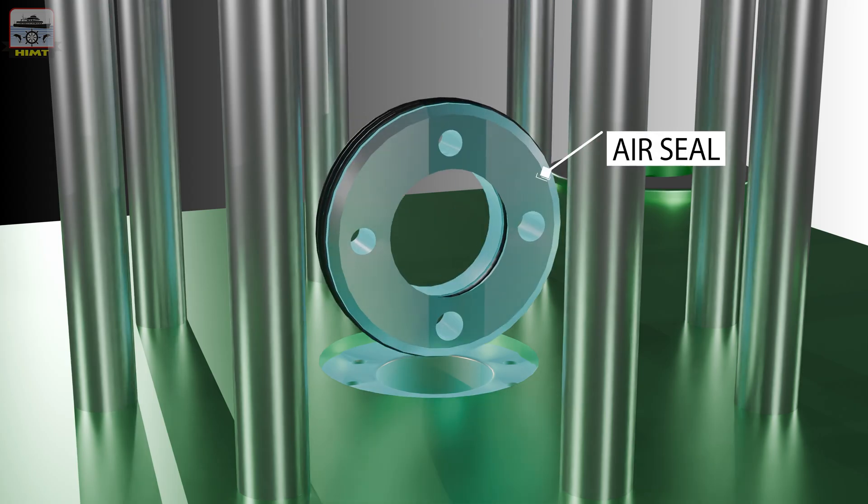The air seal is placed on top of the spindle guide. The air seal is a part that prevents air leakage from the air cylinder to the exhaust valve housing. It is made of a metallic outer ring and a rubber seal that contacts the spindle.